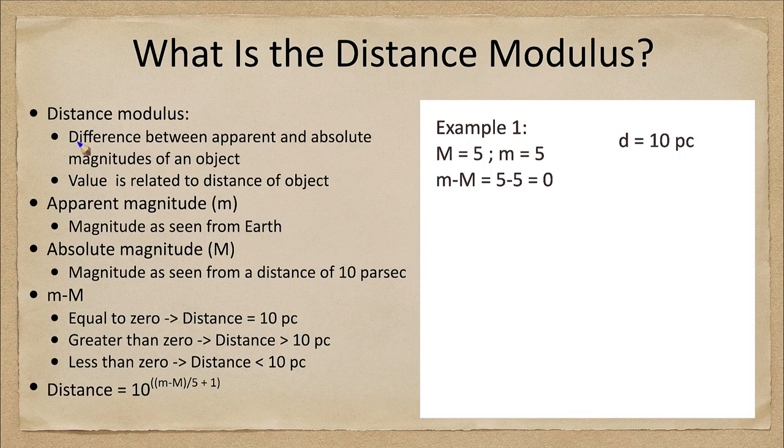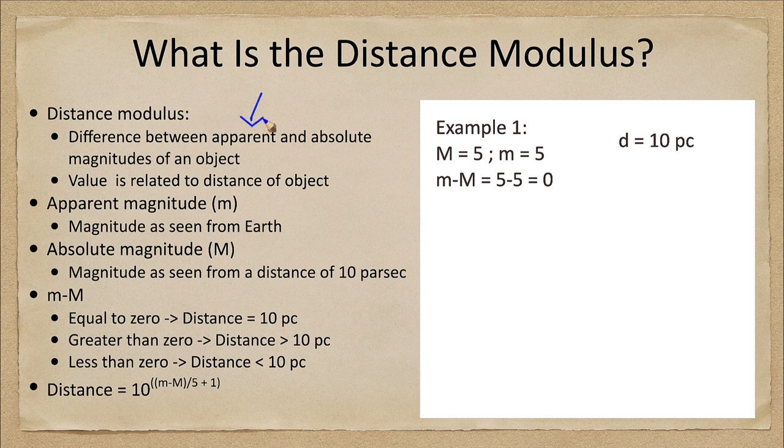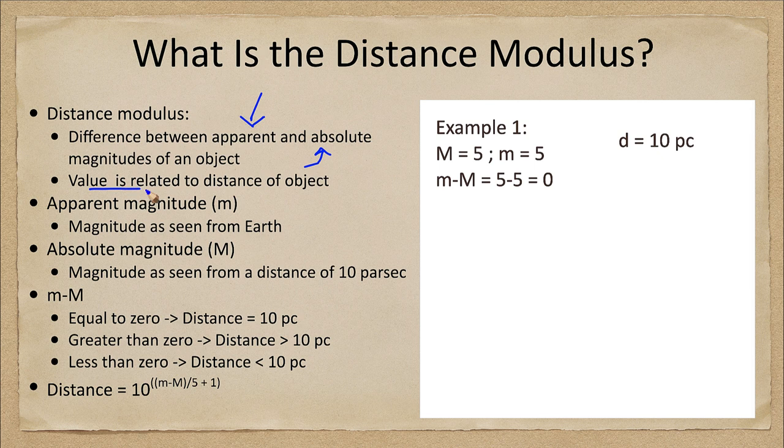So let's see how this works. The definition would be the difference between the apparent and the absolute magnitudes of an object. This value is related to the distance, how far away the object is.